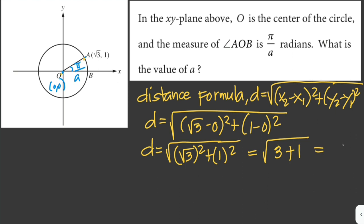3 plus 1, and that is just the square root of 4. So the distance is equal to 2. Therefore, our radius is equal to 2.